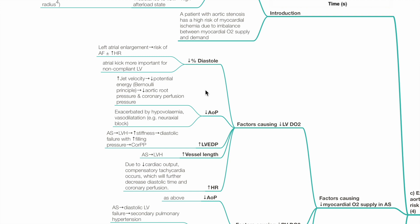Increased LVEDP: aortic stenosis leads to left ventricular hypertrophy, increased stiffness, and diastolic failure with increased filling pressures, which leads to reduced coronary perfusion pressure. Increased vessel length: aortic stenosis leads to left ventricular hypertrophy with increased coronary vessel length, increased coronary vascular resistance, and reduced coronary blood flow.